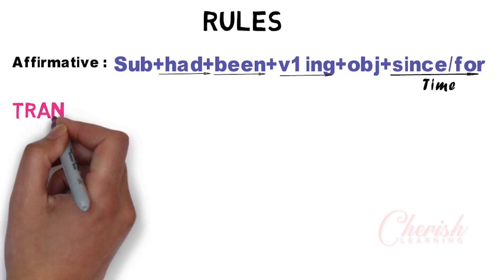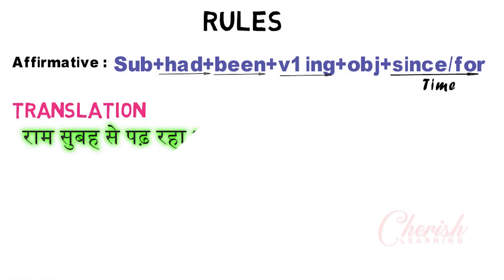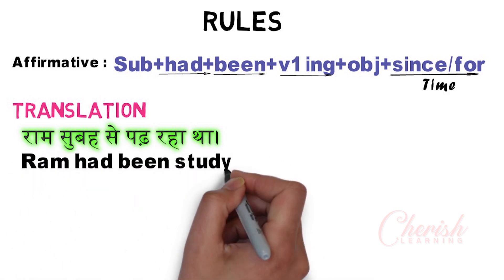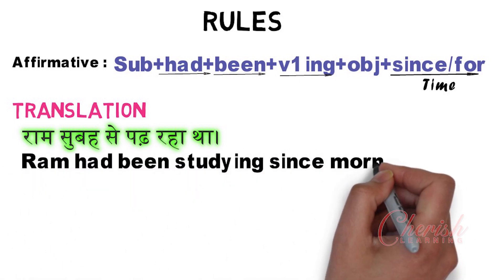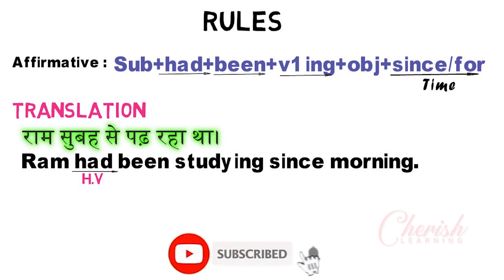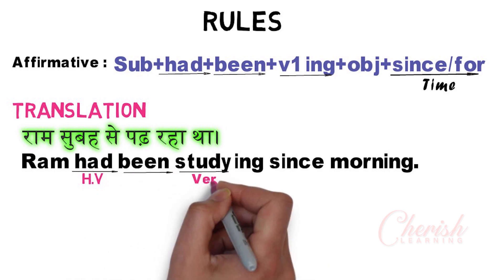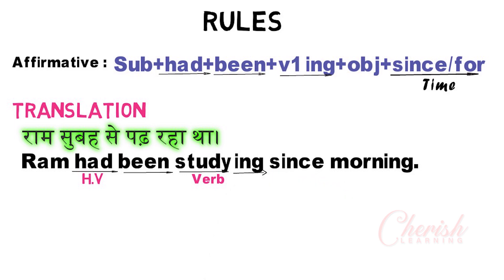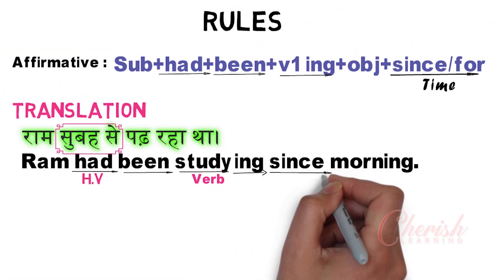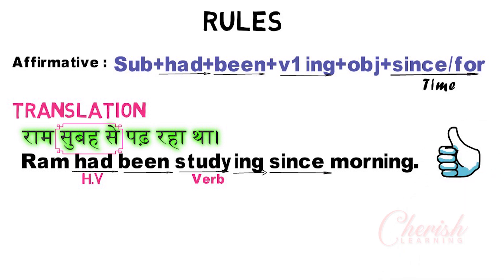Now let's do some examples. 'Ram was reading from the morning.' What will this translation be? 'Ram had been studying since morning.' Ram uses 'had' for both singular and plural subjects, because here there is only one helping verb — 'had.' Then 'been.' The verb is 'study,' study+ing = 'studying.' Because it is learning from morning, there is a specific time, so 'since' is used.